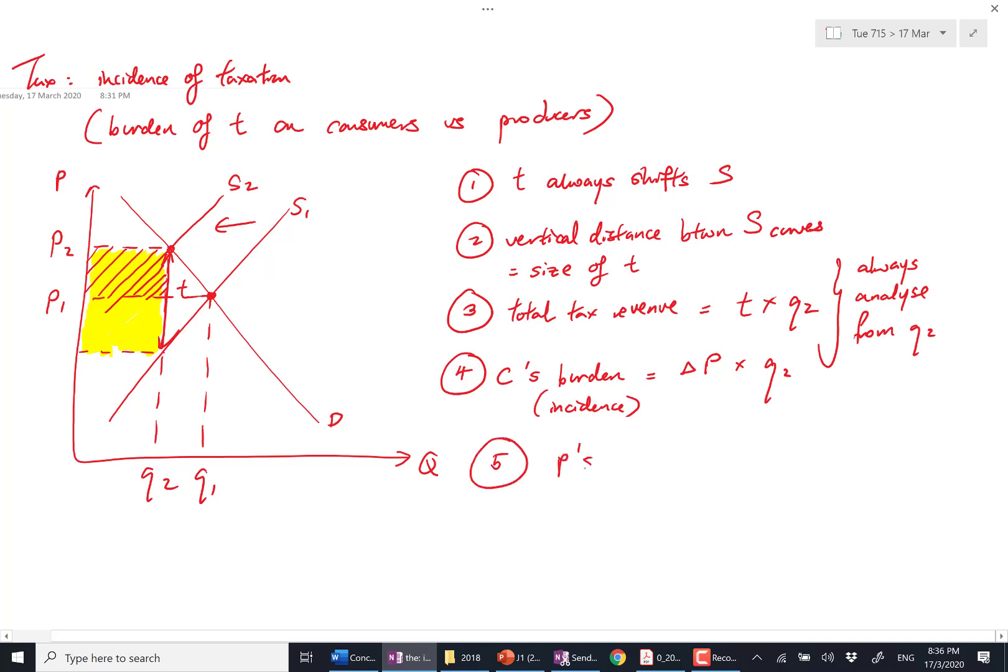Producer's share, very simple, is 3 minus 4, which means the producer's share is this one. So that's about 80% of what you need to do when you find incidence of a tax. I've just found the consumer's share and the producer's share.